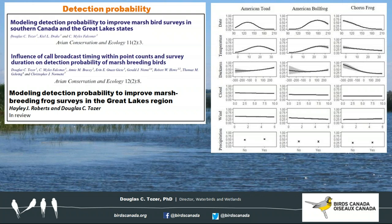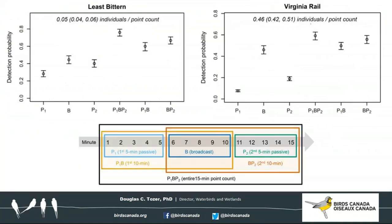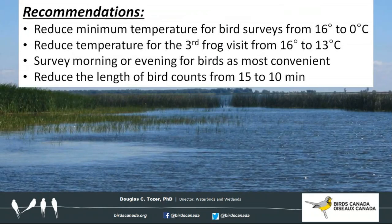For instance, we see relationships for detection probability for each of three frog species in relation to environmental variables. We also looked at how detection probability varies according to survey length and in relation to broadcasts — for example, differences in detection probability of least bittern and Virginia rail during five-minute, ten-minute, or fifteen-minute surveys, or differences from five-minute or ten-minute counts depending on whether the five or ten minutes was at the beginning or end of the fifteen-minute survey.